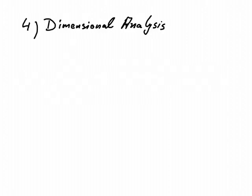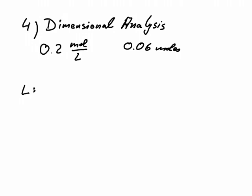The fourth method is the one I prefer, because I don't have to remember an equation or which section of the triangle to place units in. Dimensional analysis simply guides you by using the units of what you've been given and what you're looking for. We have 0.2 mole per liter and we need 0.06 moles, so we're looking for liters. I have liters, but they are in the denominator.